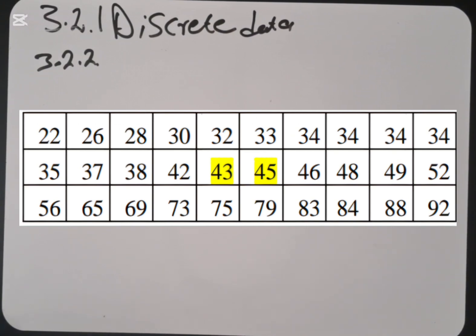I've arranged it in this box. We know that it's 22, 26, 28, 32, 33, 34, 34, 34, 35, 37, 38, 42, 43, 45, 46, 48, 49, 52, 56, 65, 69, 73, 75, 79, 83, 84, 88, and 92.